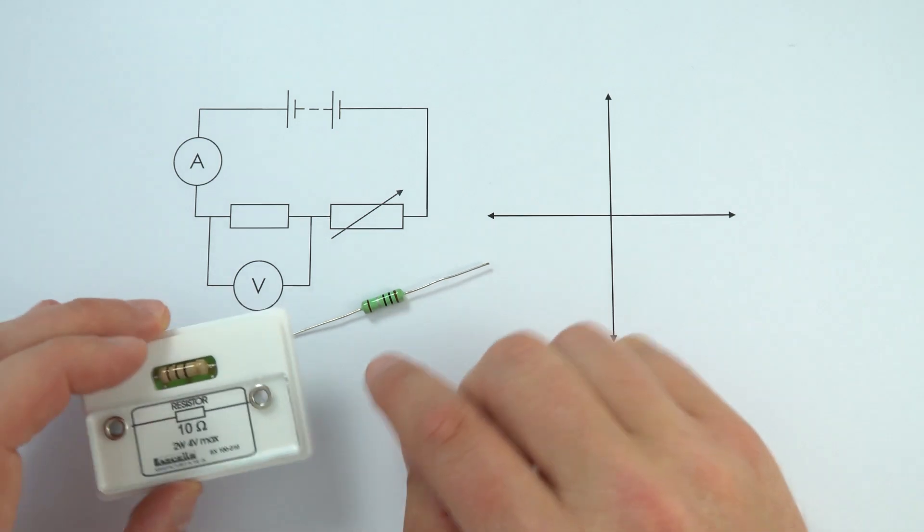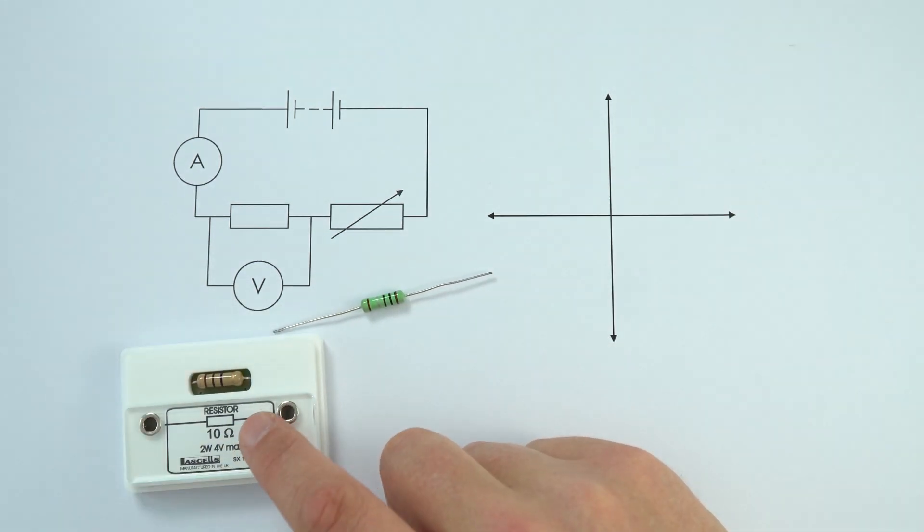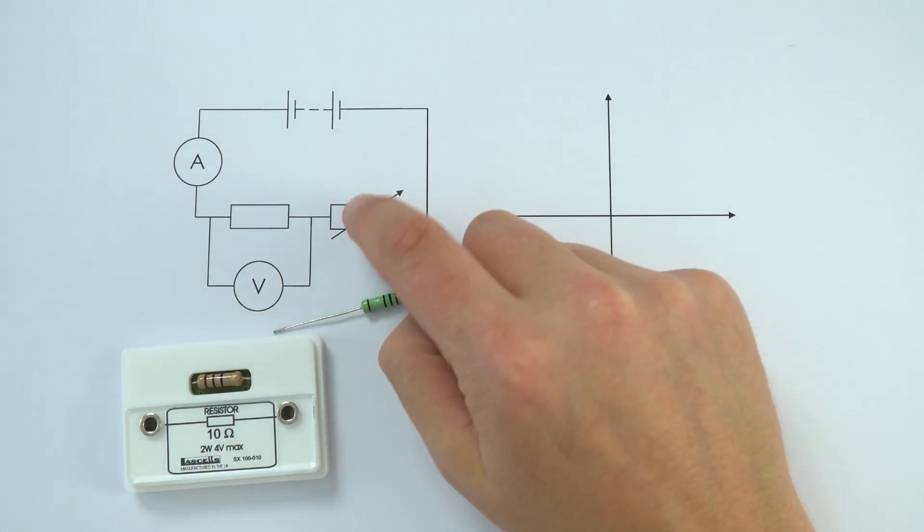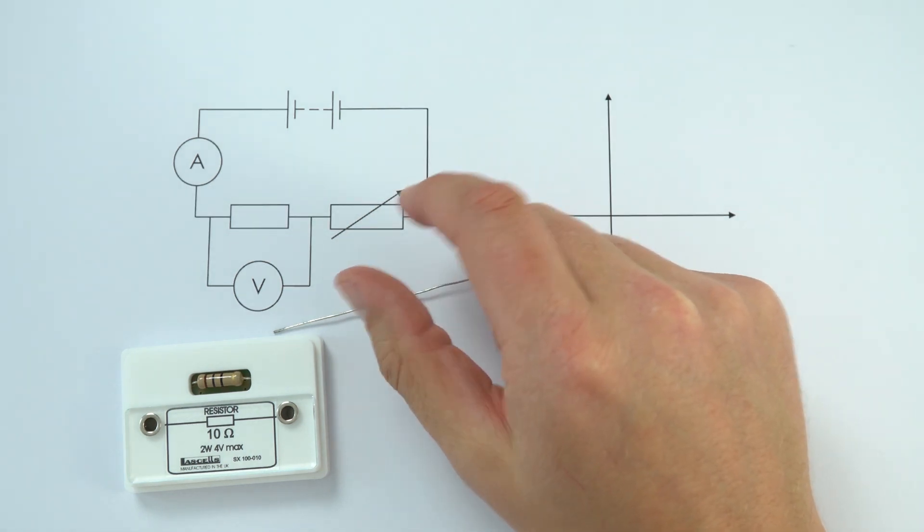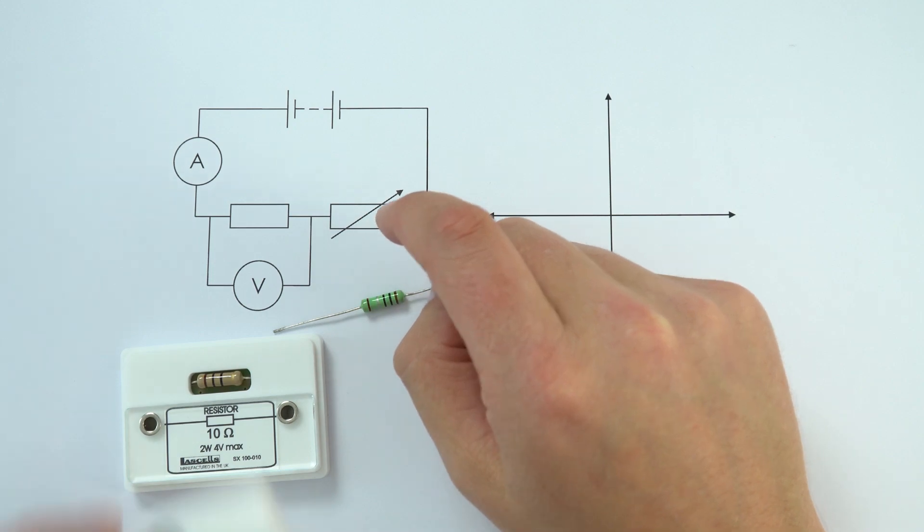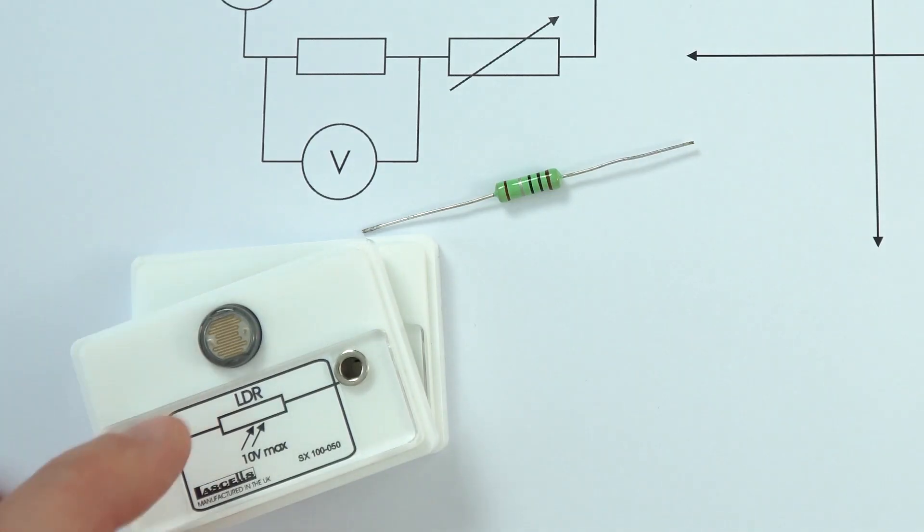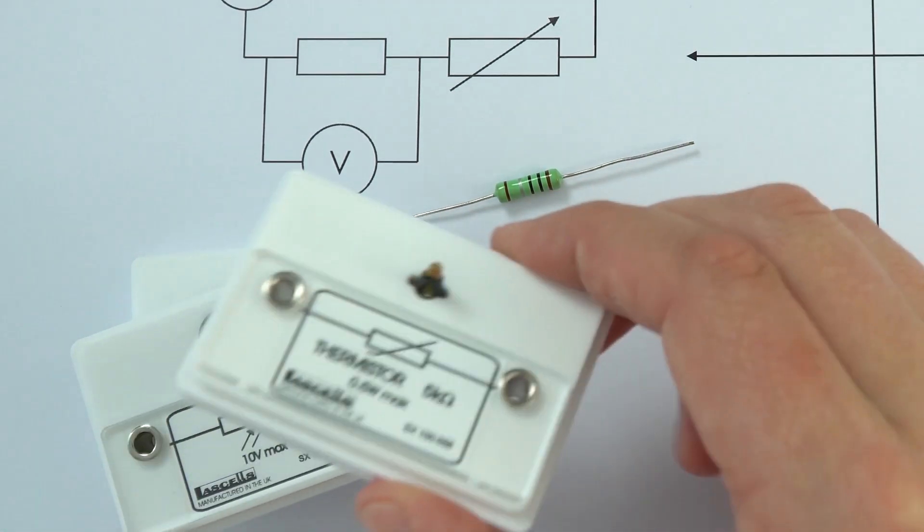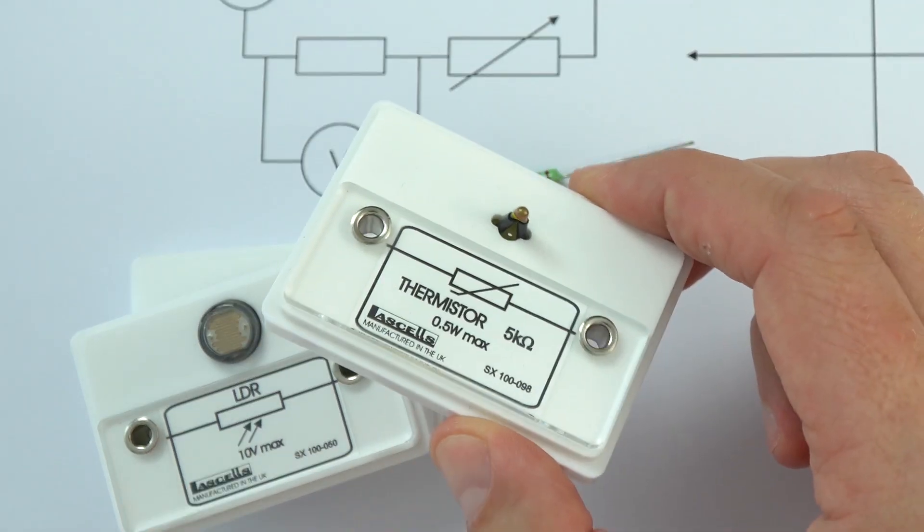This is a fixed resistor, but we have other sorts of resistors as well. This one is a variable resistor, so we can control and change the resistance when it's in the circuit. We have other things where light controls the resistance or even temperature, like LDRs and thermistors.